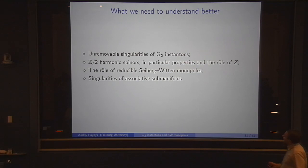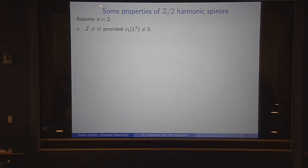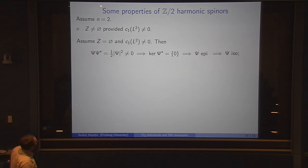I would like to spend a few minutes on Z/2 harmonic spinors and their properties. For that I will assume that we have just two spinors, and I claim that in that case Z is a non-empty set, provided the determinant line bundle is non-trivial. The argument is very easy.